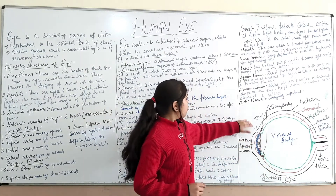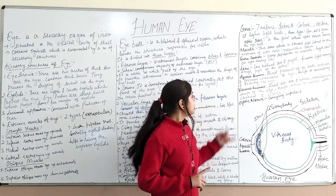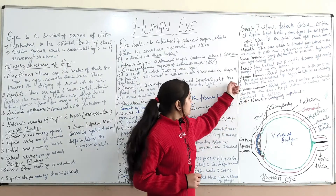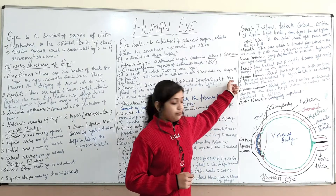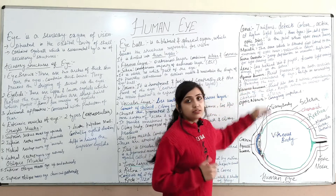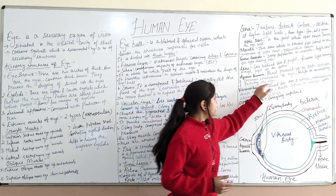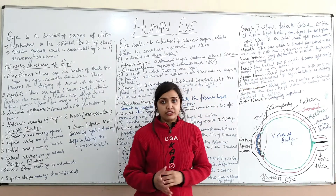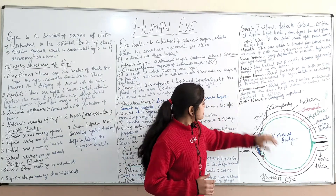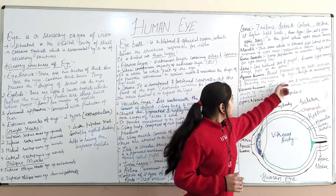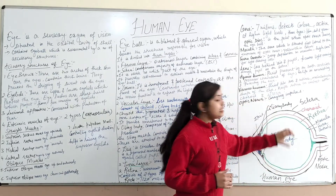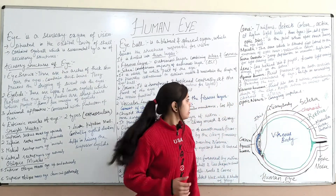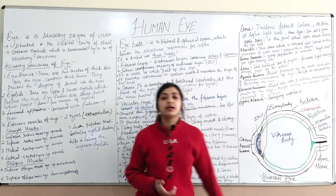There are two fluid-filled chambers in the eye: the aqueous humor and the vitreous humor. The aqueous humor is a fluid present in both the anterior and posterior chambers of the eye, helping to nourish and protect the eye. The vitreous humor is the fluid present between the lens and the retina; it maintains the shape of the eye and keeps the retina in contact with the choroid and sclera.